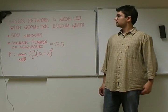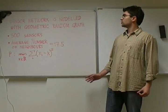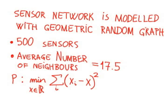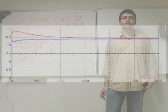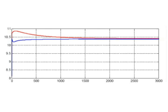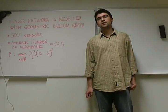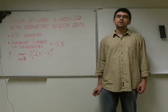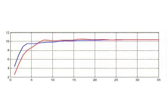As a simple illustrative example, we model the sensor network with a geometric random graph. We have 500 sensors and the average number of neighbors of each sensor is 17.5, and we want to minimize a quadratic cost function. On the first picture we can see the results of the dual subgradient algorithm, showing the number of iterations on the x-axis. The second picture shows the results of the algorithm used in my project, and we can see that the number of iterations is significantly decreased.